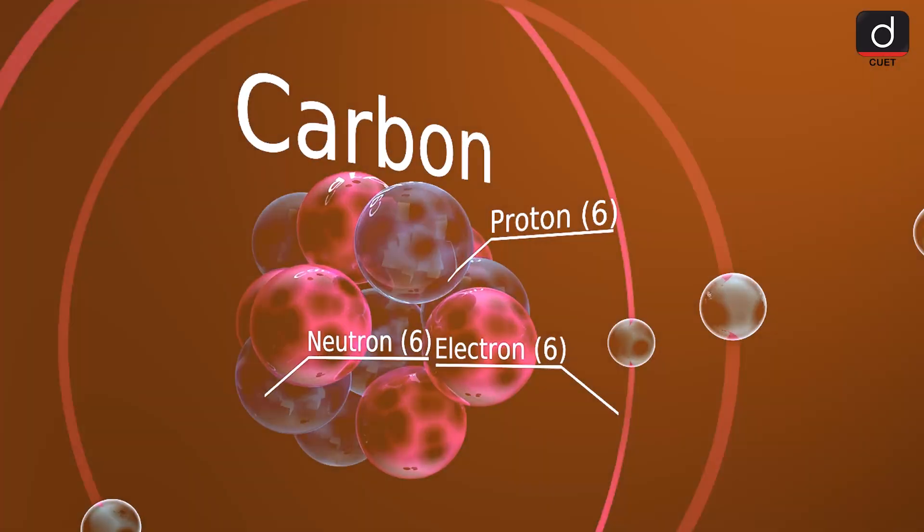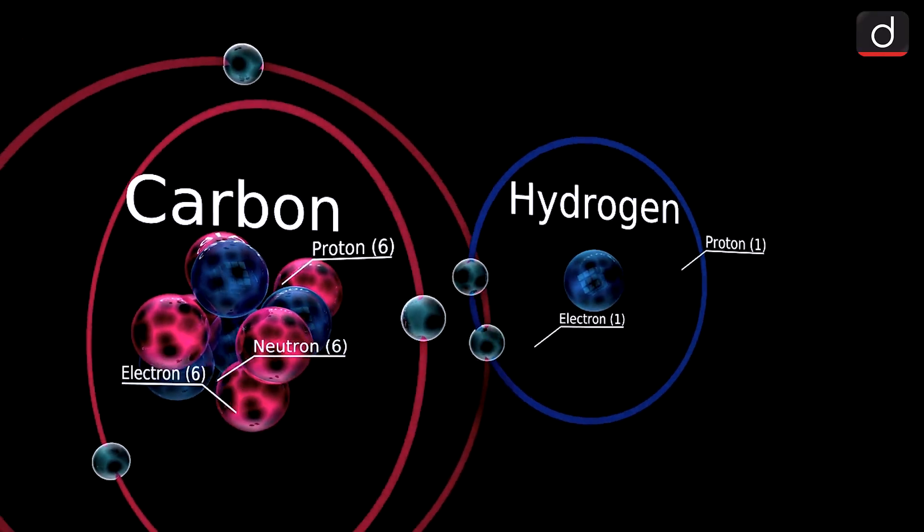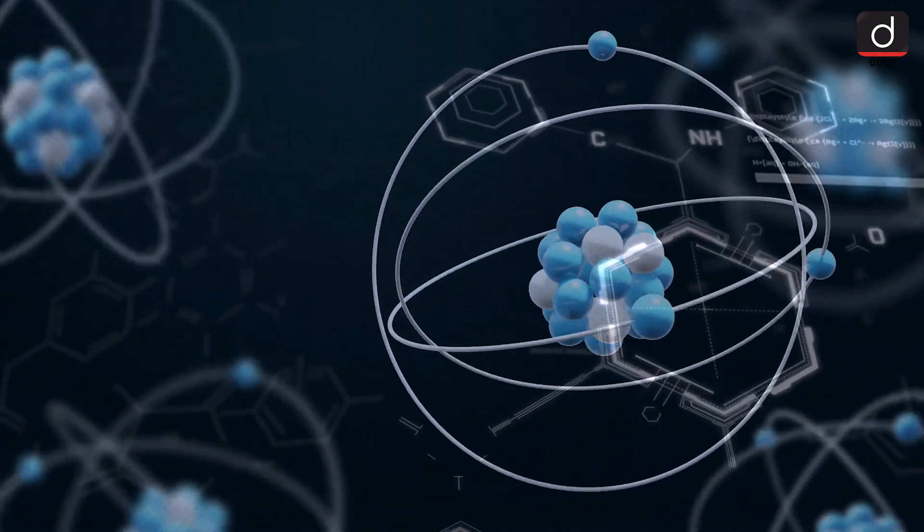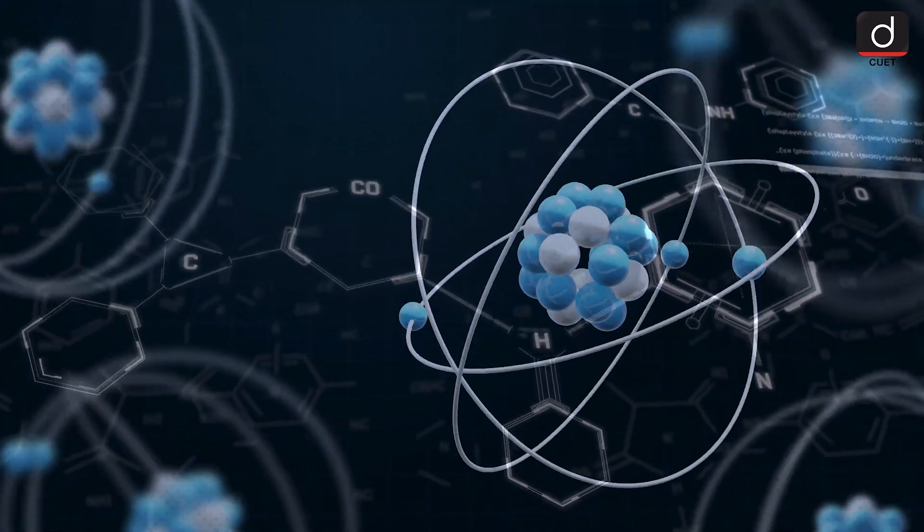The carbon atom. Carbon has 6 protons, 6 neutrons and 6 electrons. Its nucleus contains protons and neutrons, while the electrons orbit around the nucleus in energy levels.